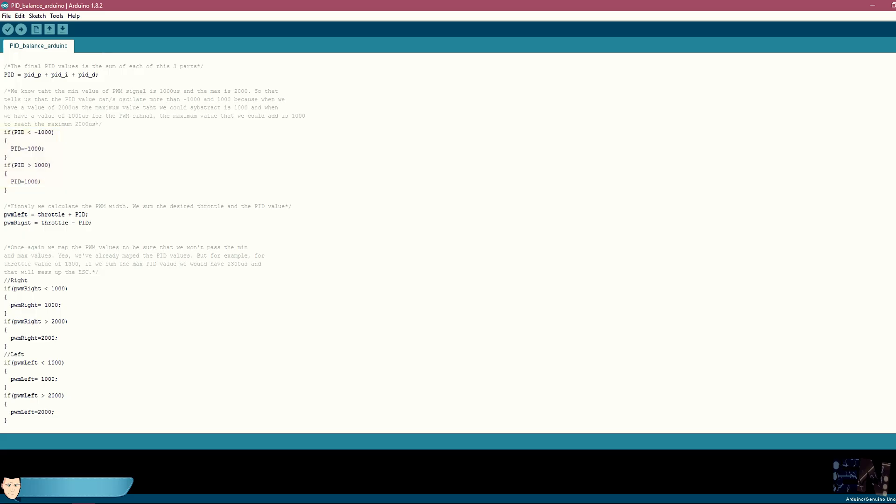We calculate the throttle and write these values to each motor. Remember that we have to add the PID output to one motor and subtract it to the other one. We are done. The PID control is ready.